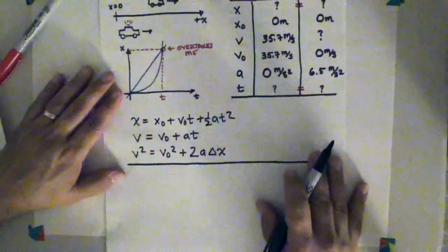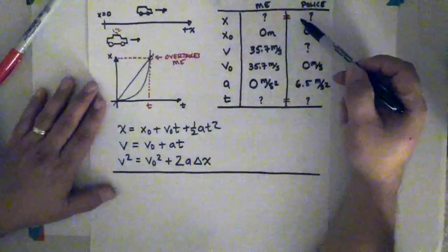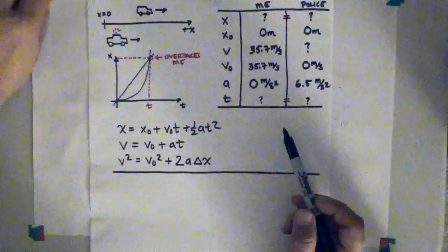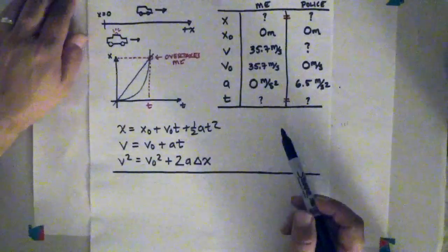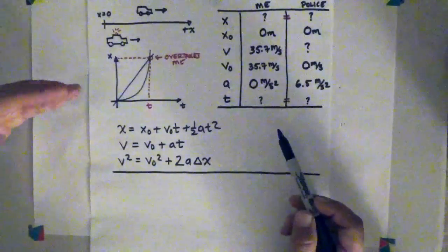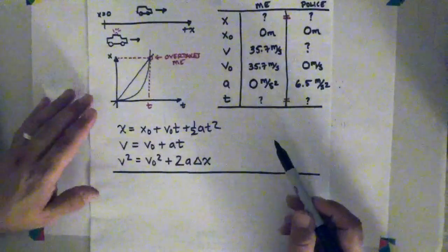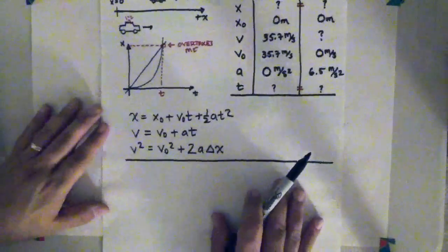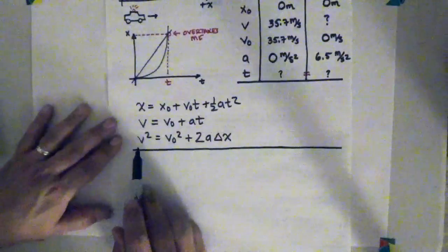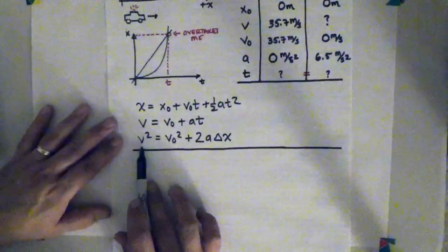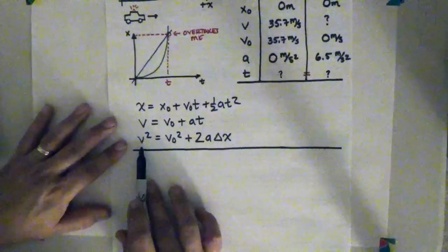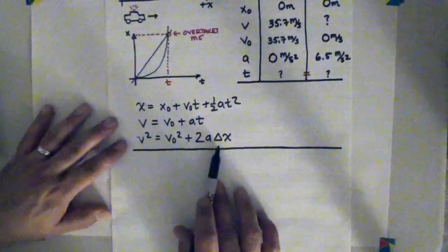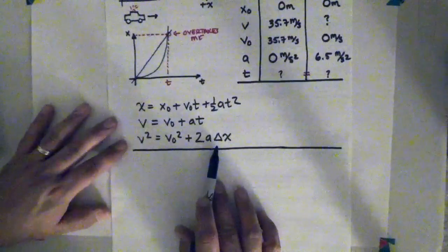So those are my kinematic equations. Now I have two unknowns. The final position is unknown, and the time is unknown. And as is always the case, I'm going to have to figure out one of them, usually by solving simultaneous equations. So in this case, we're actually talking about position. So let's see if we can figure out the position from these problems. Now in previous examples, we've often used this equation down here, the v squared equation. Now for me, this is not a useful equation, because v and v naught are the same, and a is zero. So that's a trivial equation for me.